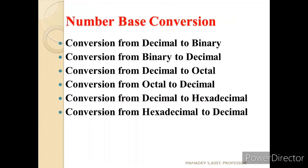We have different conversions here. The first one is conversion from decimal to binary, conversion from binary to decimal, conversion from decimal to octal, conversion from octal to decimal, conversion from decimal to hexadecimal, and the last one is conversion from hexadecimal to decimal. We'll see them one by one.